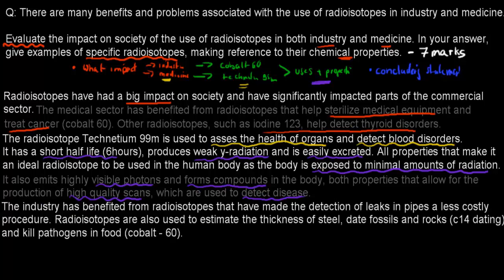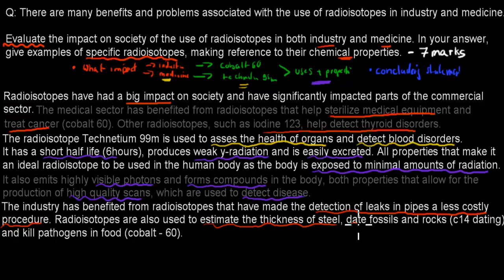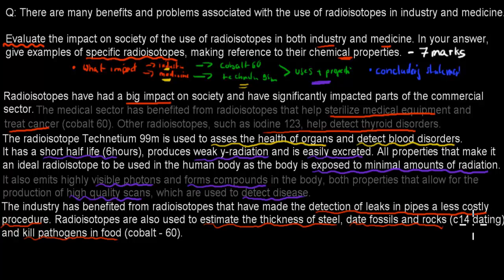Now I cover the industry. The industry has benefited from radioisotopes that have made the detection of leaks in pipes a less costly procedure. Radioisotopes are also used to estimate the thickness of steel, date fossils and rocks — carbon-14 dating — and kill pathogens in food — cobalt-60. These are the general impacts for industry, with examples such as detection of leaks, estimating steel thickness, fossil dating, and killing pathogens.